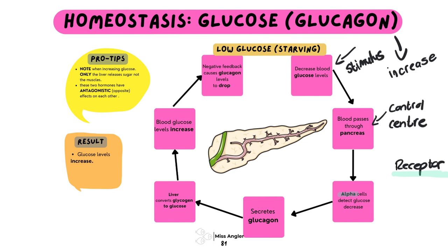Now that the alpha cells have detected a drop in glucose, what they're going to do is secrete the very important hormone glucagon. Glucagon is then going to be sent to the liver. Now the liver is the effector. I want you to notice that when we make insulin, insulin is sent to both the liver and the muscles, but in this answer you will notice only the liver is mentioned.